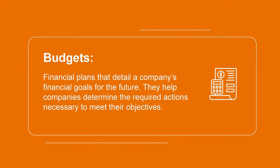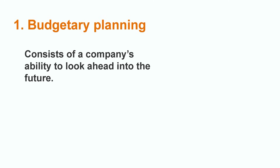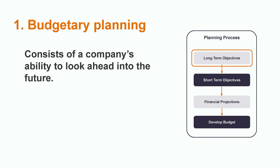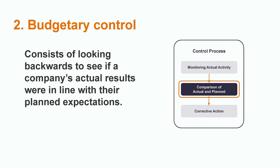Budgets are plans that detail a company's financial goals for the future. They help companies determine the required actions necessary to meet their objectives. There are two key elements of the budgeting process consisting of budgetary planning and budgetary control. Budgetary planning consists of a company's ability to look ahead into the future, including coming up with specific strategic long-term and short-term objectives for the organization, as well as developing financial projections. Budgetary control, on the other hand, consists of looking backwards to see if a company's actual results were in line with their planned expectations. To do this, companies create performance reports using either static or flexible budgets.